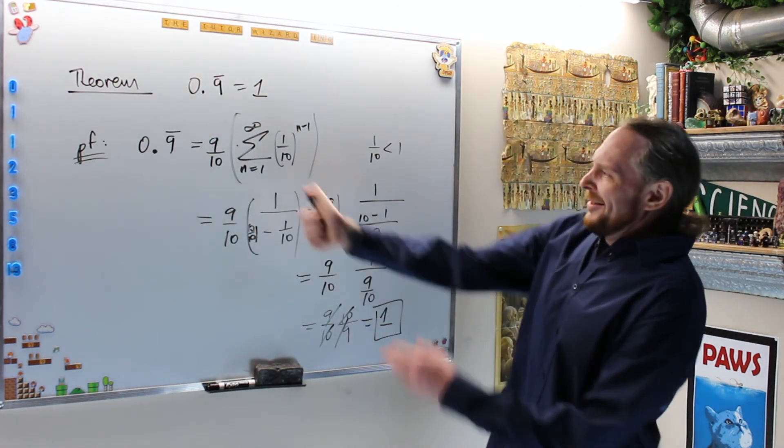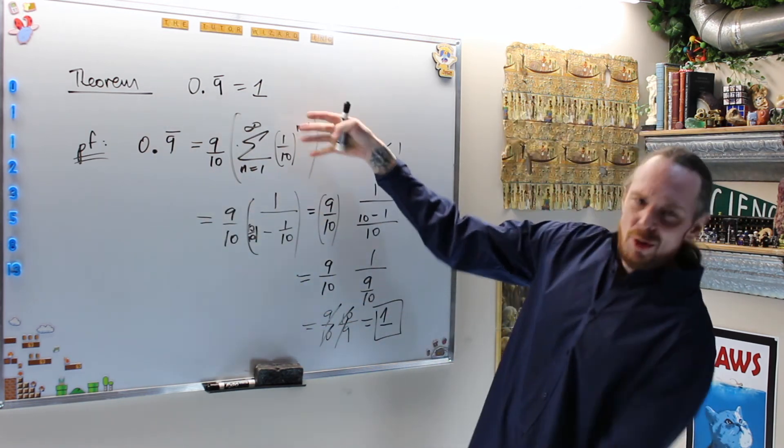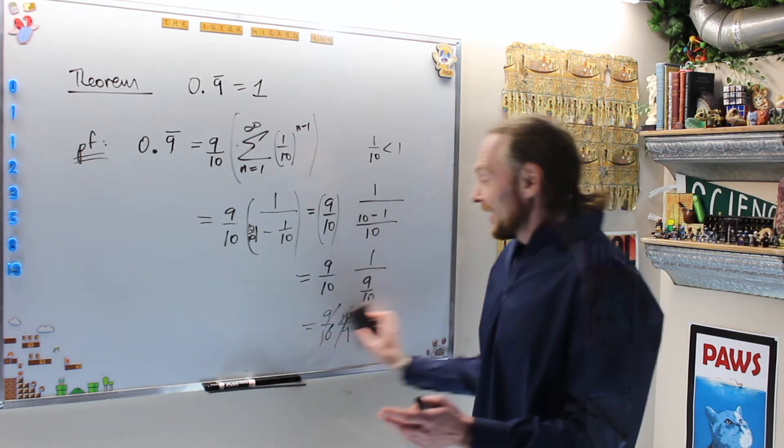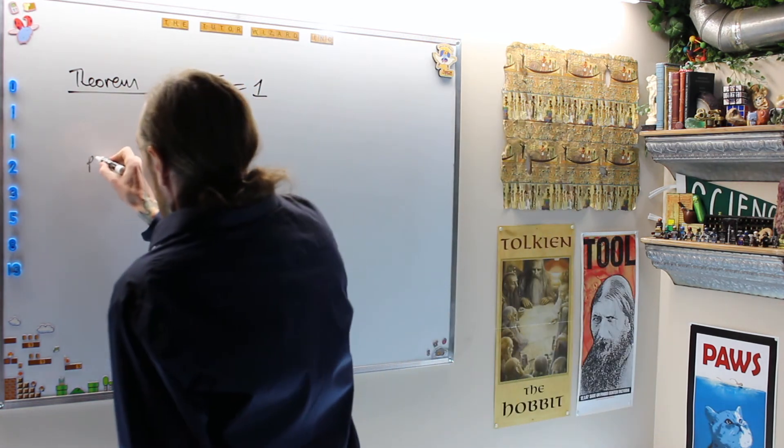You're like, well technically yes, I just showed 0.9 repeating is 1, but you used this horrible machinery. All right, all right, all right. Let's do it with a different technique. If you don't like that argument, I'll force another one down your throat. Proof 2.